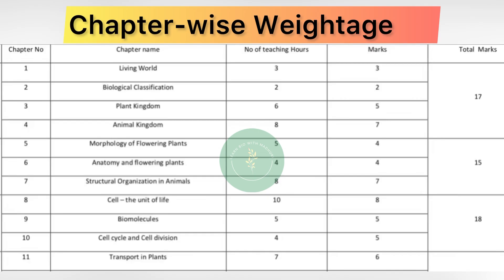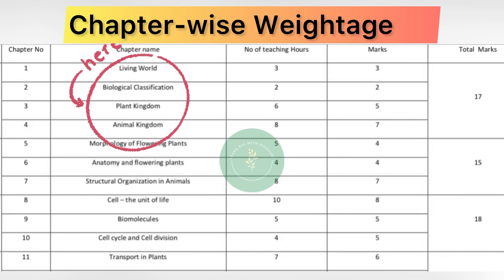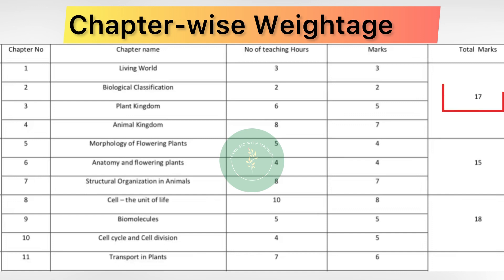Let us discuss chapter-wise marks allotment and total marks given for each unit, so that you can prepare well and score 70 out of 70. Starting with chapter number 1, Living World, from unit 1 — marks allotted will be 3 marks. Chapter number 2, Biological Classification — marks allotted will be 2 marks. Chapter number 3, Plant Kingdom — marks allotted will be 5 marks. Chapter number 4, Animal Kingdom — marks allotted will be 7 marks. So from unit 1, there are 4 chapters and a total of 17 marks allotted in the board examination.